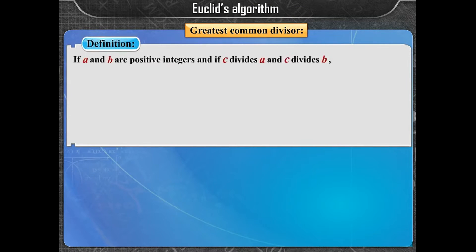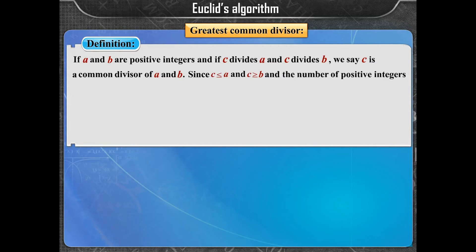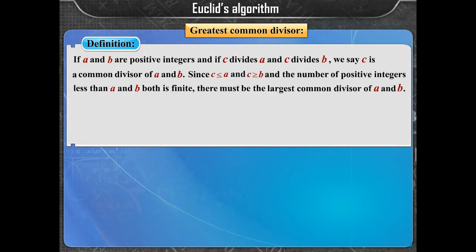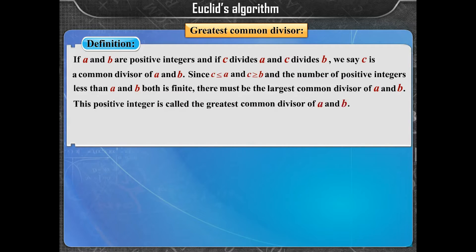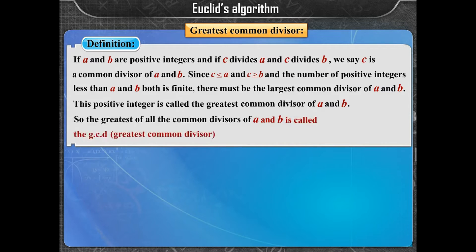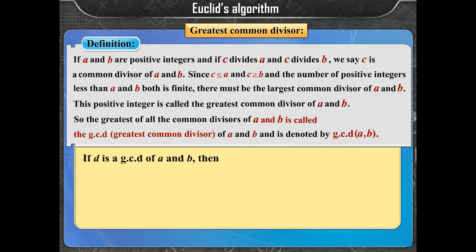If A and B are positive integers and C divides A and C divides B, we say C is a common divisor of A and B. Since C is less than or equal to both A and B, and the number of positive integers less than both A and B is finite, there must be a largest common divisor. This positive integer is called the greatest common divisor of A and B, denoted GCD(A, B).